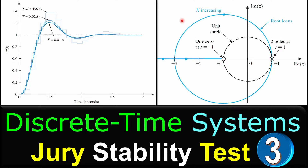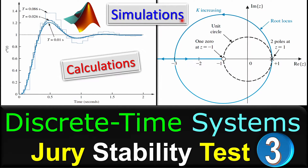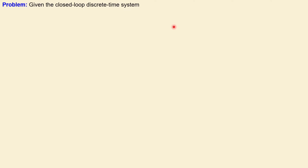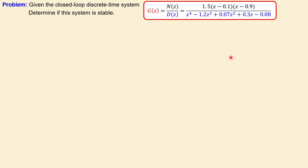Greetings and welcome to a new video. We continue with discrete time systems and stability using the Jury stability test. This will be example number three and we will work out the calculation step by step. In this case we have a closed-loop discrete time system that is a fourth order system, so we have four poles and two zeros, one at 0.1 and another one at 0.9. The question is: determine if the system is stable.